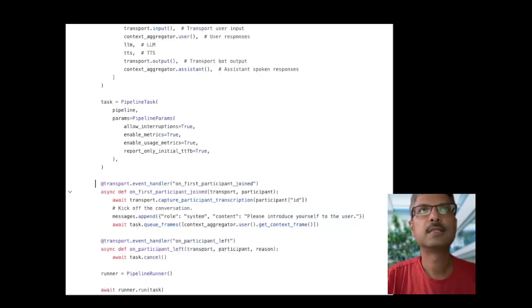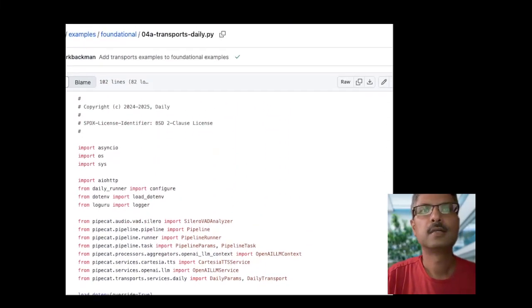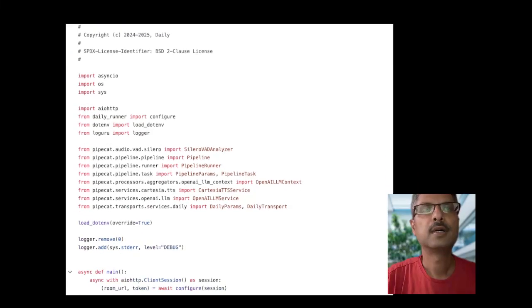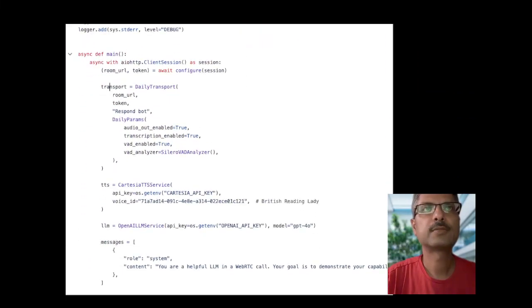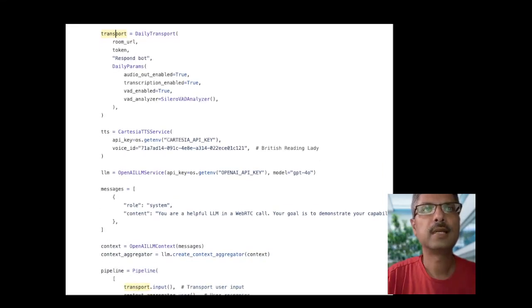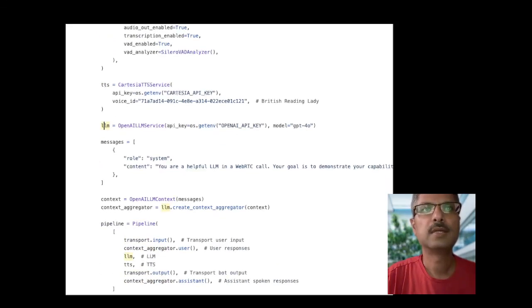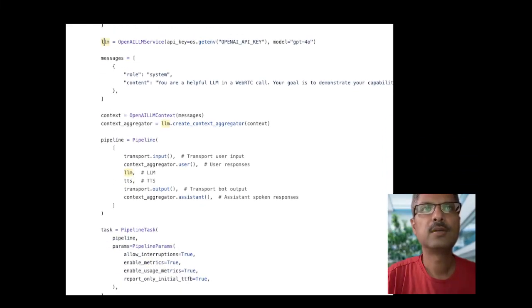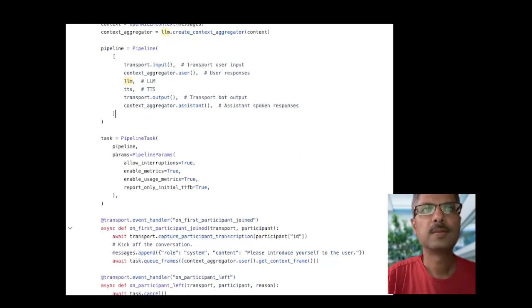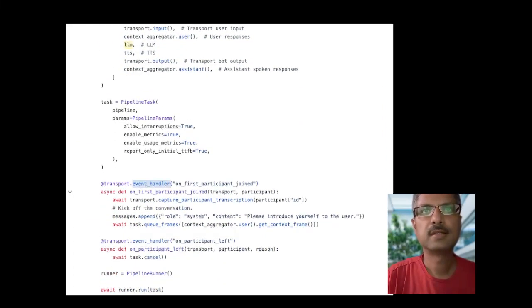For example, let's quickly look at this whiteCat example. You encounter new concepts like transport, TTS, LLM, these pipelines, and then there are these event handlers. So why do we really need all of these constructs to build this voice application?